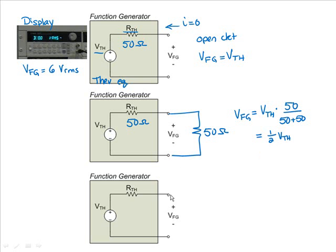Now let's look at another case. Let's suppose that the output load is 50 kilo-ohms, which is much larger than the internal resistance of 50 ohms. Again, we can use voltage divider to determine the value of the output voltage in this case.